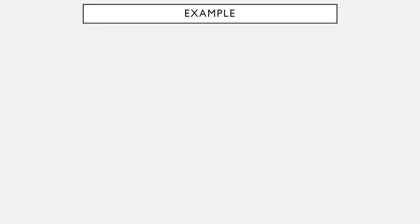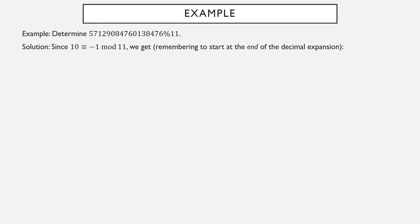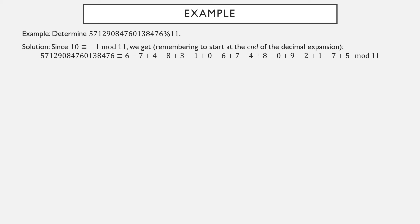Let's do an example of this divisibility by 11 trick: determine the remainder when a large number is divided by 11. We make an alternating sum starting at the end of the expansion, so modulo 11 the number is equivalent to: 6 − 7 + 4 − 8 + 3 − 1 + 0 − 6 + 7 − 4 + 8 − 0 + 9 − 2 + 1 − 7 + 5. Computing this long alternating sum gives 8. So the number is equivalent to 8 modulo 11, and the remainder is 8.